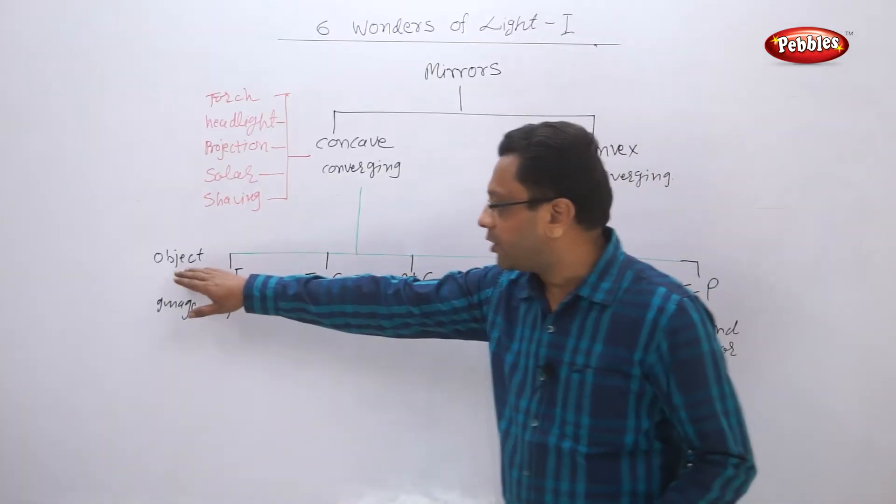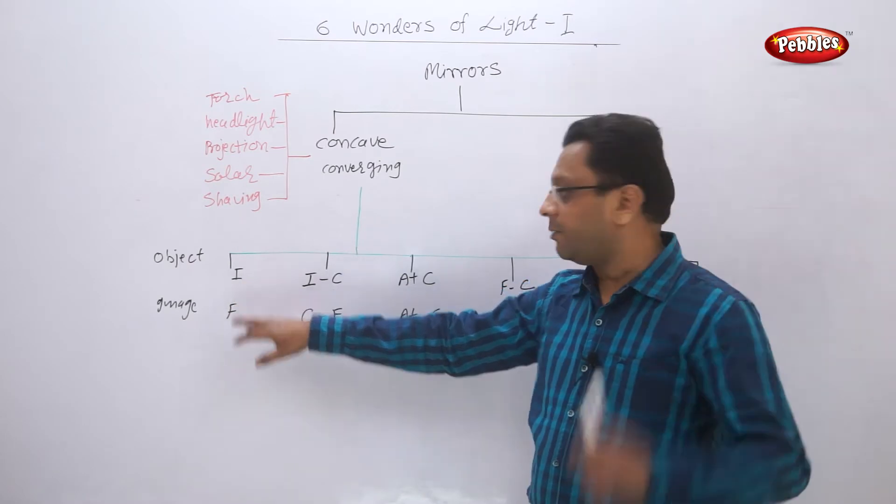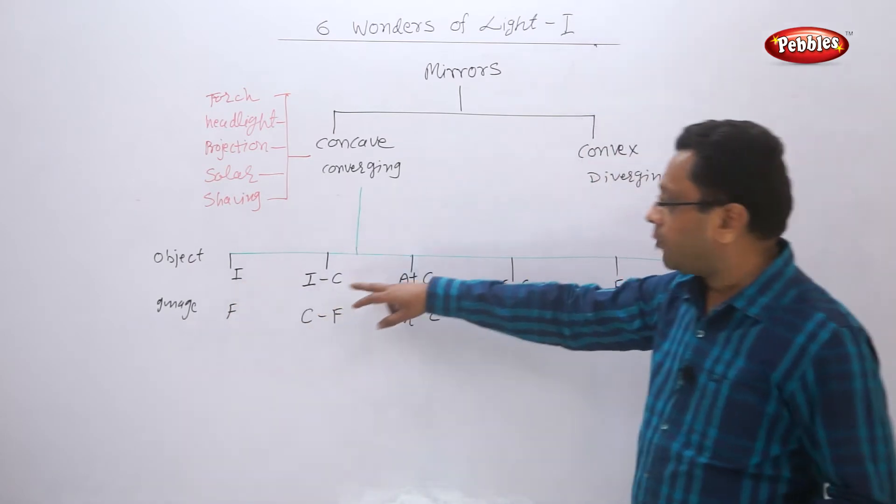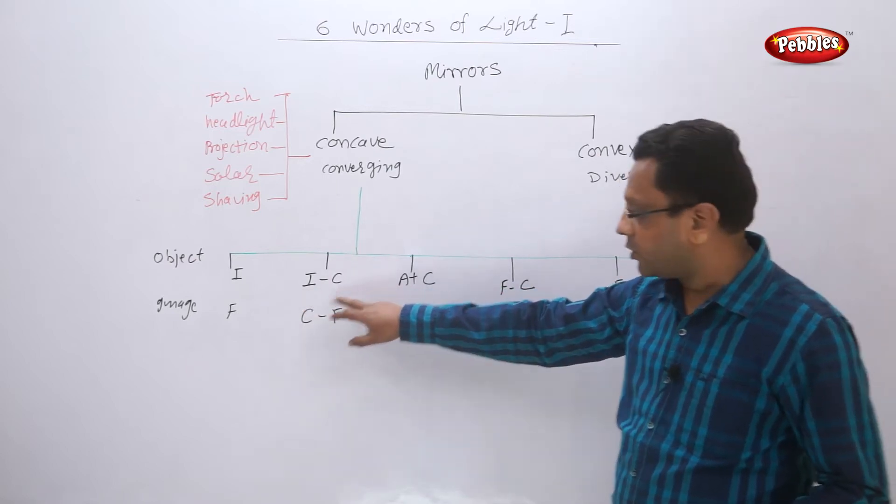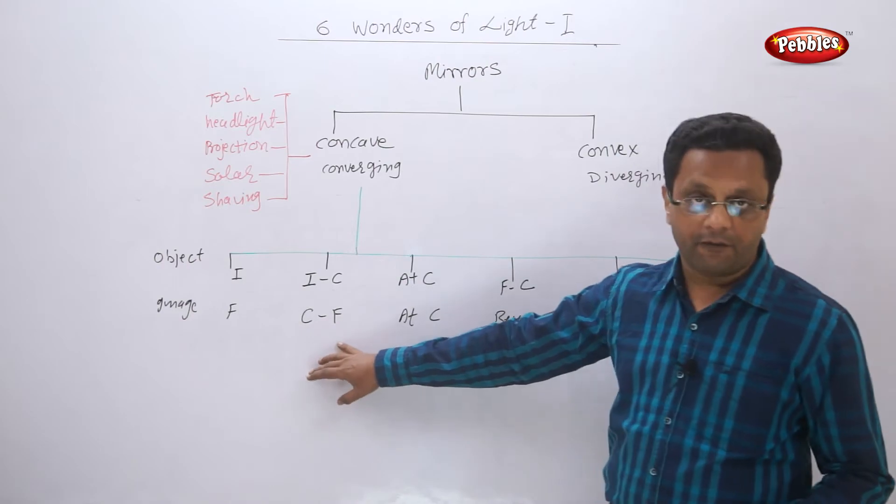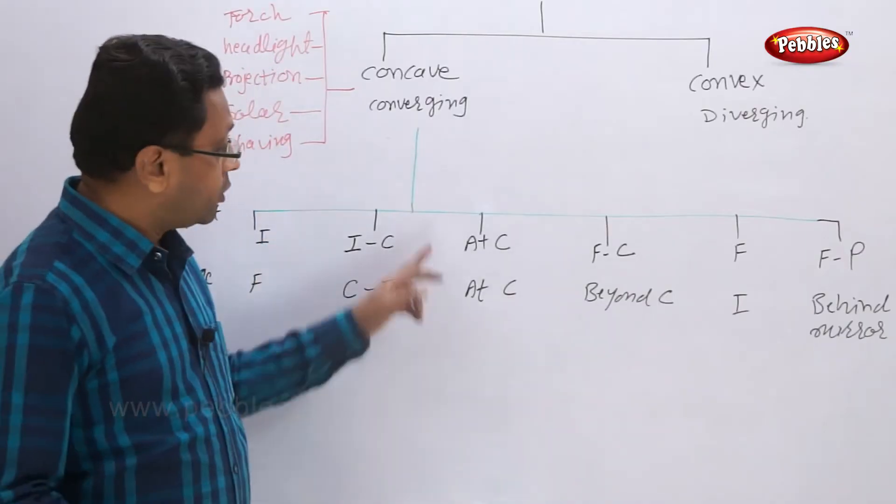When the object was at infinity, the image was a point image at F. When the object was between infinity and C, the center of curvature, the image falls between C and F.